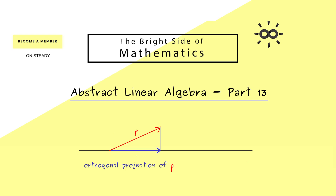And you see in the picture that this orthogonal projection is also a vector. But this is not all, because we also find a third vector here, which we could call the normal component of P, with respect to the given fixed subspace. And now if we call this vector Y, we have a linear combination for P. Namely, P is given as x plus y. Now of course this is not a surprise, because you can always decompose a vector into a linear combination. However, here we want more, because we want to have a right angle between x and y. And of course, this is exactly what orthogonal means here.